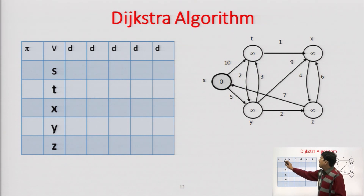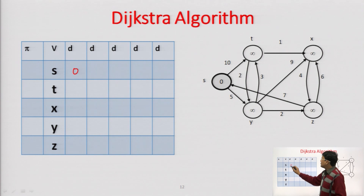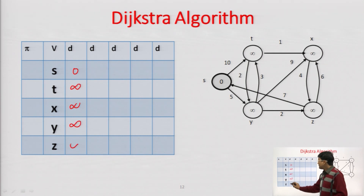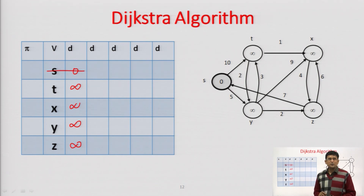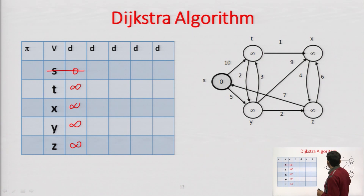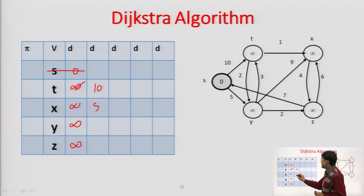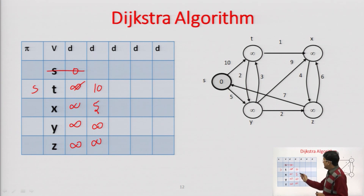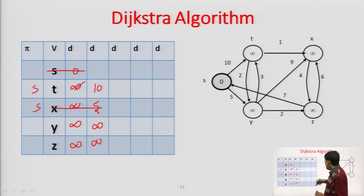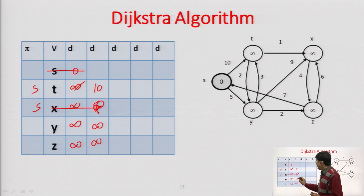We can also do this same work using the table method. For the table method, we use π (predecessor representing V vertex) and d (distance). First, we set source distance to zero and all others to infinite. After this, we delete the smallest vertex — since this works with a priority queue, we delete the minimum. We explore all edges from S: S to T and S to Y. Set T's distance to 10, Y's distance to 5. The remaining vertices are unapproachable. T's predecessor becomes S, and Y's predecessor also becomes S.